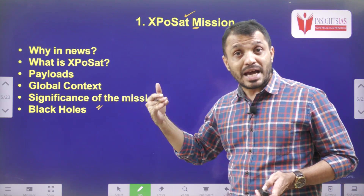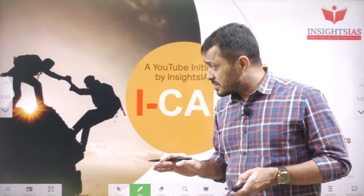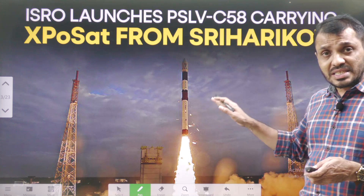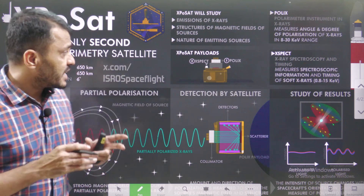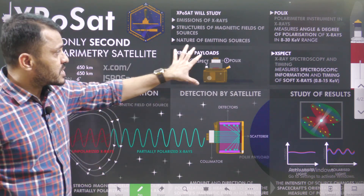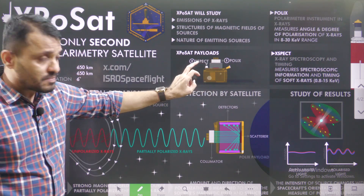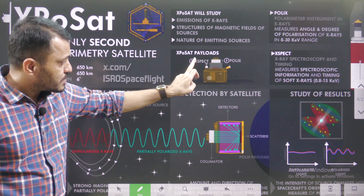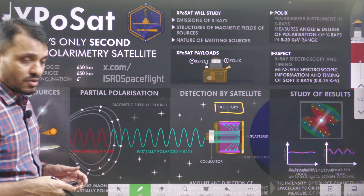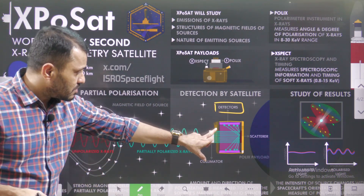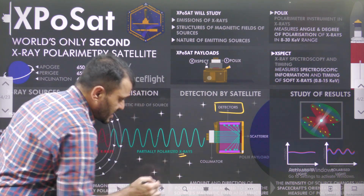We will also discuss about black holes and why black holes are relevant in relation to the XPoSat mission. Here is a brief overview: PSLV-C58 launched XPoSat. XPoSat mainly consists of POLIX as well as XSPECT. POLIX and XSPECT act like a space observatory — they observe X-rays emitting from various celestial sources.